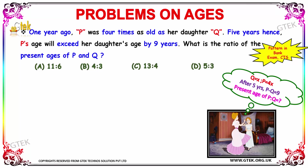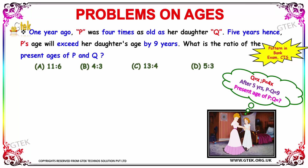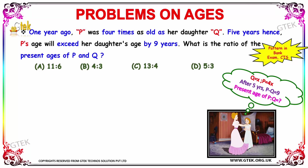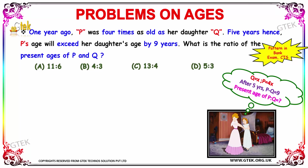And it is given that after 5 years, P's age will exceed her daughter's age by 9. So after 5 years, the difference between the ages will be equal to 9.